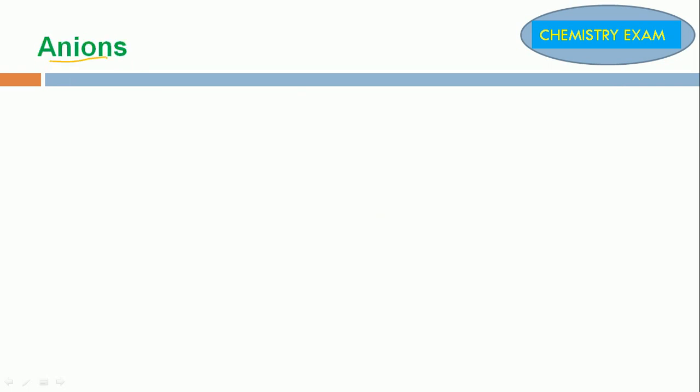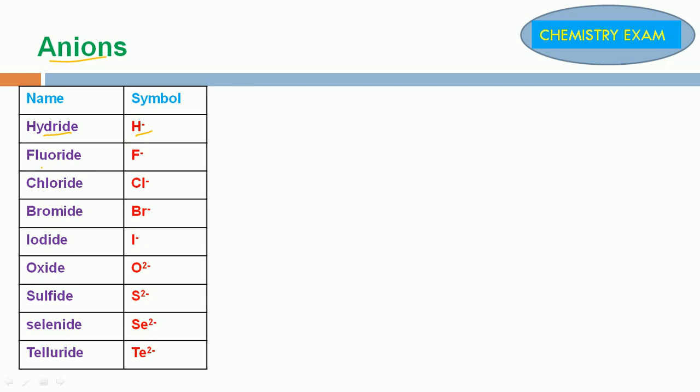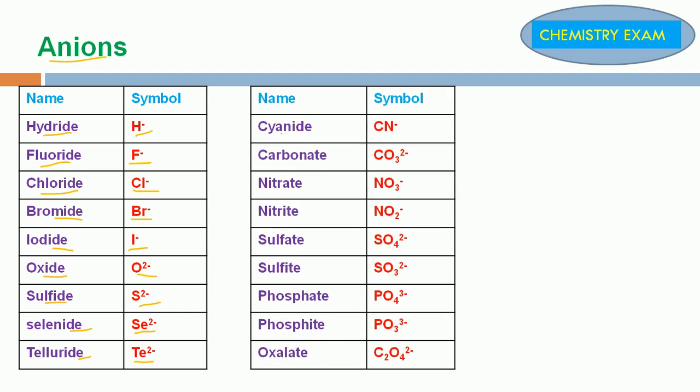Next, we are going to discuss about anions. Cyanide CN-, Carbonate CO3 2-, Nitrate NO3-, Nitrite NO2-, Sulfate SO4 2-, Sulfite SO3 2-, Phosphate PO4 3-, Phosphite PO3 3-, Oxalate C2O4 2-.